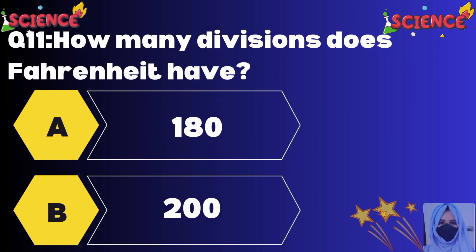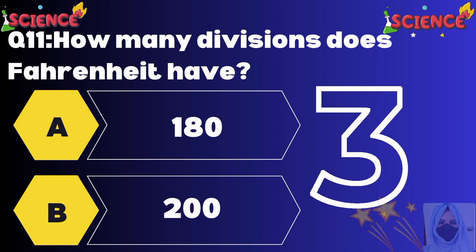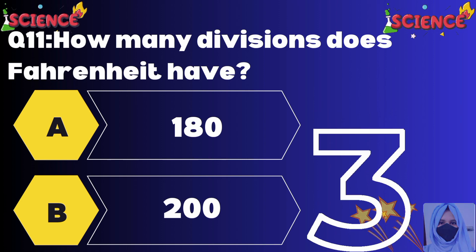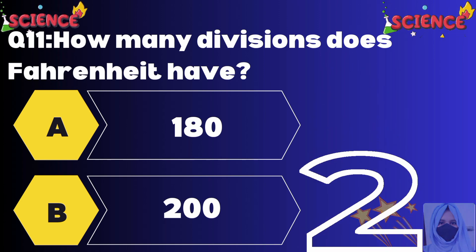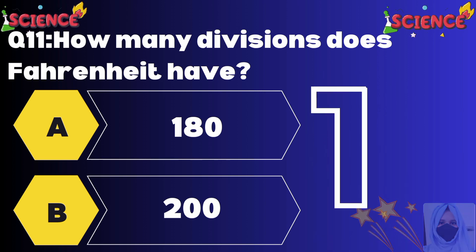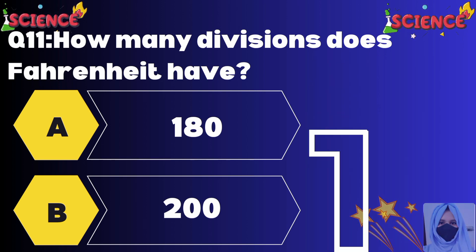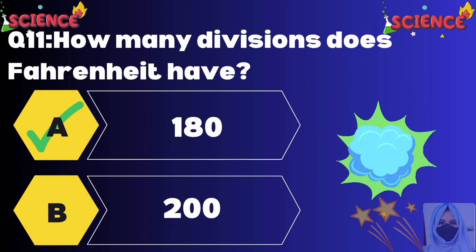How many divisions does Fahrenheit have? Option A 180, option B 200. The correct answer is option A, 180.